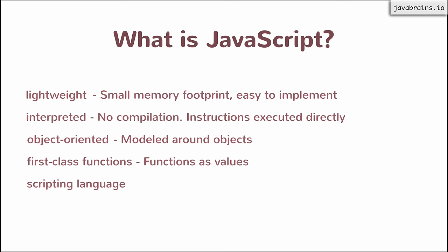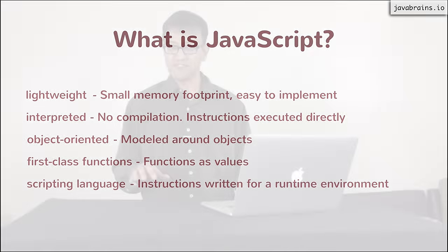So what is a scripting language? A scripting language is basically a language where instructions are written for a runtime environment. The best example I can give for a scripting language is something like a shell script. If you've done Linux programming or Unix programming using shell scripts, or even Windows programming with PowerShell, you'll be familiar with this idea.